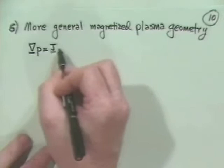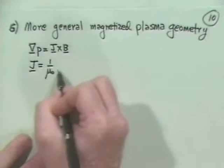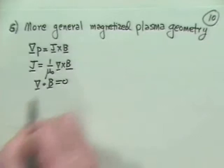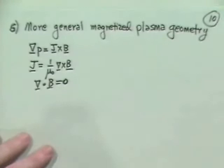Let's go back to our equations. Grad P is equal to J cross B, and J is equal to 1 over mu naught curl of B. And we should also keep reminding ourselves that whatever magnetic field we have, it has no magnetic monopoles.